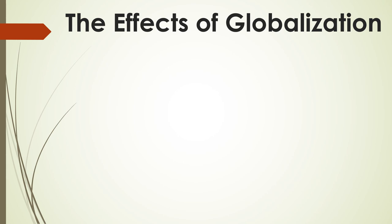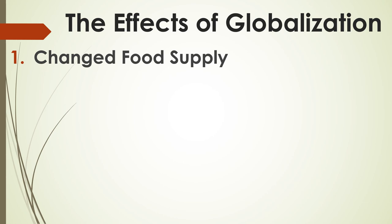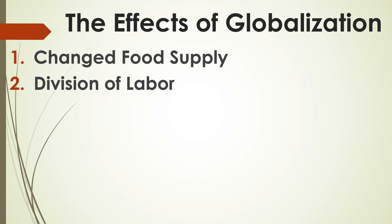After knowing the causes of globalization, here are the effects. Number one is the change in food supply — because food supply is no longer tied to the seasons, we can buy food anywhere in the world at any time of the year. Another effect is the division of labor, because multinational corporations always search for the cheapest location to manufacture and assemble components, so production may move from developed to developing countries where costs are lower.